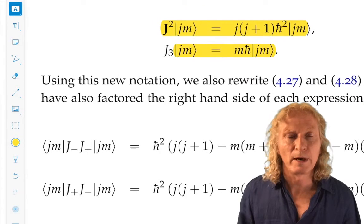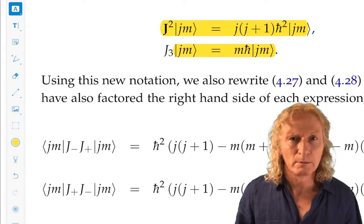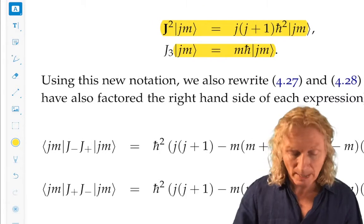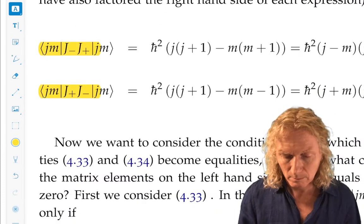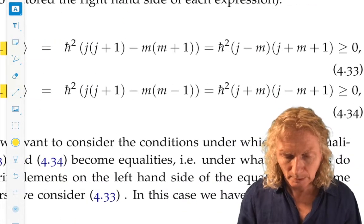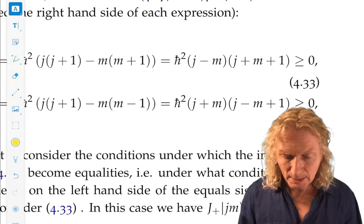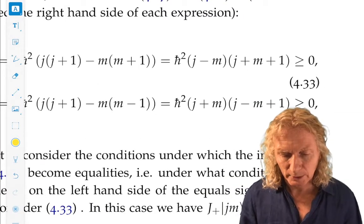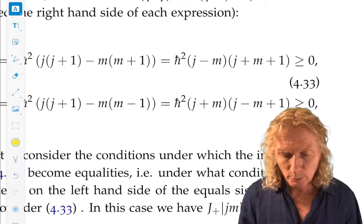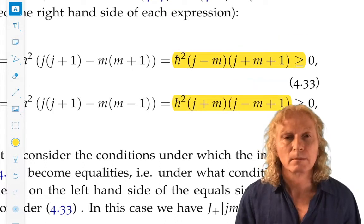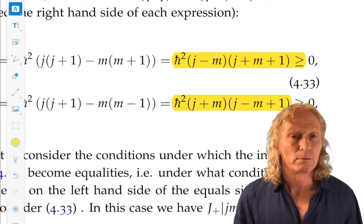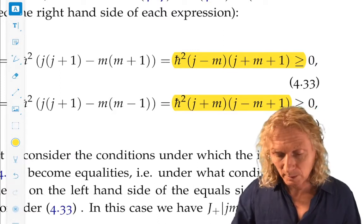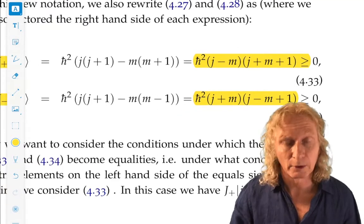Now, if we take this value of A, J times J plus 1, and plug it back into the expression for the corollary, we get these nice expressions, which give us a much more clear relation between the maximum and minimum values of M, which is J and minus J, and M itself. It gives us a constraint.